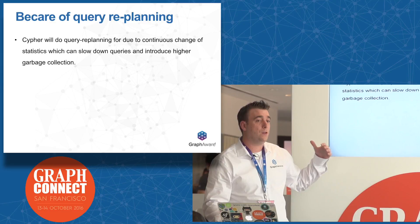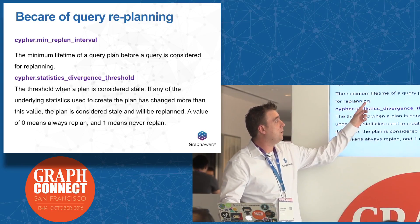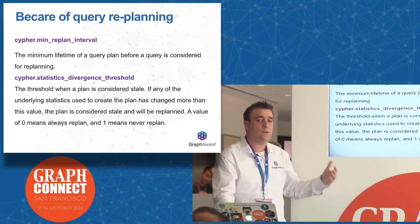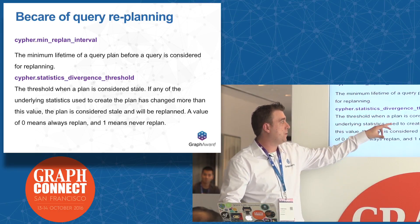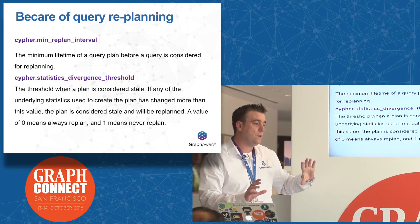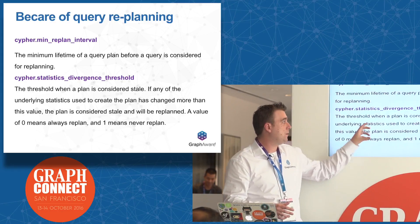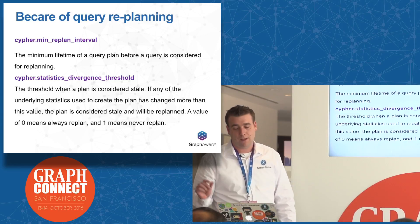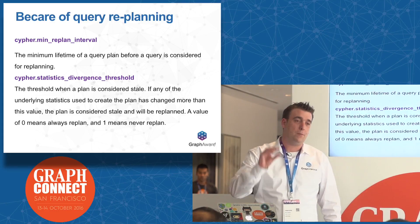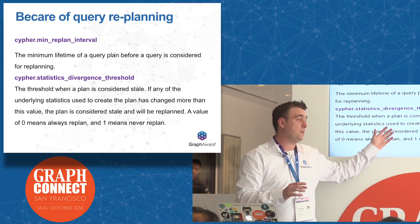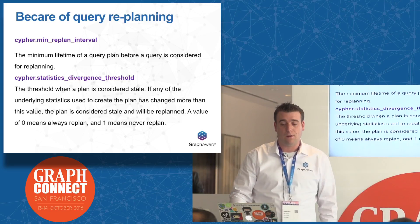Replanning also introduces garbage collection, so your database may have 500 milliseconds of extra latency. The relevant parameters are: the replan interval — how often Cypher will replan regardless — and the divergence threshold, a factor representing how much statistics must change before a query plan is marked stale. A factor of one means never replan. The Cypher author mentioned they are thinking of making this configurable at the query level, since it impacts all your other queries too.